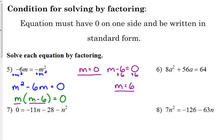Let's look at the next example. 8a squared plus 56a is equal to 64. First things first, it's got to be equal to zero. So we need to subtract the 64 from both sides. So we've got 8a squared plus 56a minus 64 is equal to zero. It looks like we have a GCF, right? That's the first thing that we should look for when we factor, a GCF.